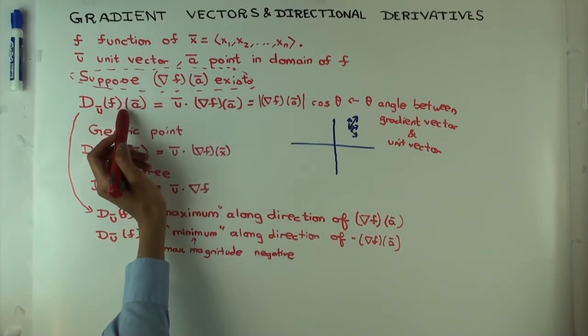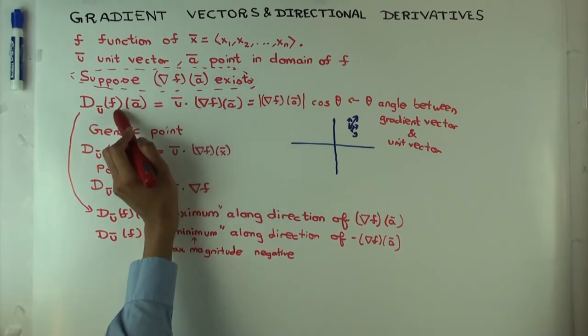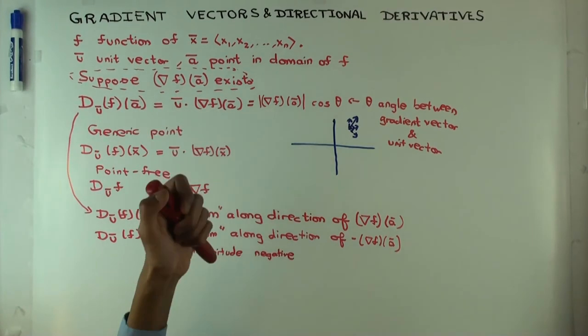So you can have a situation where the directional derivative exists and the gradient vector doesn't, but if the gradient vector exists, then the directional derivative must exist.